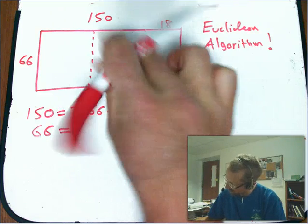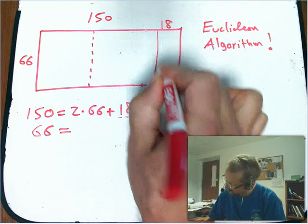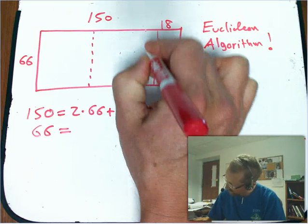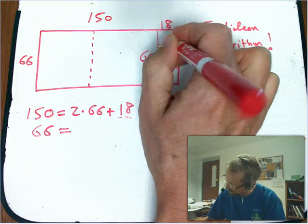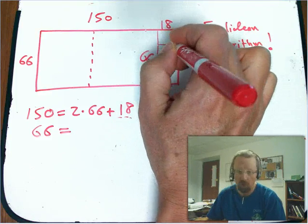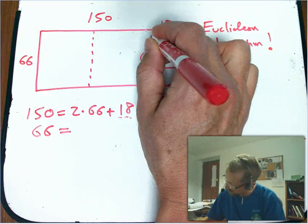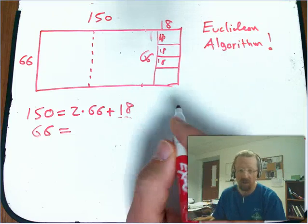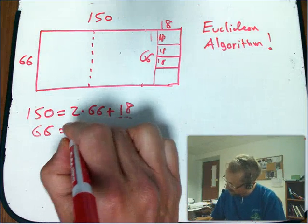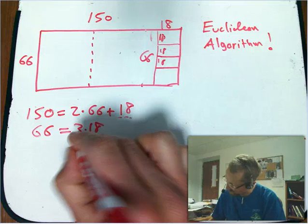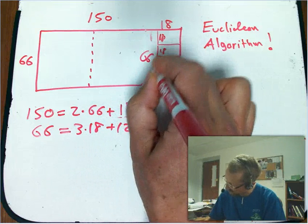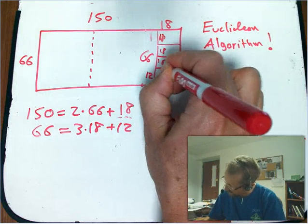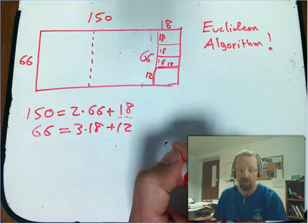In other words, take as many 18 by 18 squares as we can out of that 66. I know they don't look like squares, but they're supposed to be squares. Try to imagine that they're squares. So these are all 18s. I should have measured it out, I guess. So that's 3 times 18. So that's 54 plus 12. So there's a 12 left over. And this is still an 18. So that's an 18 by 12 rectangle.